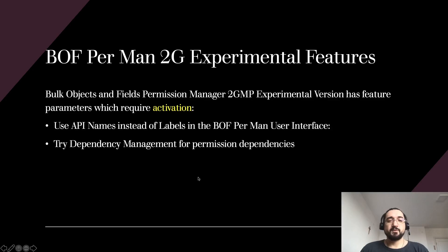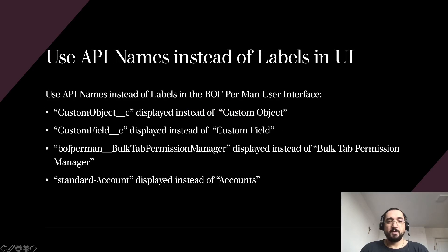There are two experimental features which require activation. The first is to use API names instead of labels in the user interface. If you enable this feature, you will see object developer names like custom_object__c instead of the label, custom_field__c instead of the field label, and the namespace prefix tab developer name instead of the tab label. The same applies for standard tabs — you will see standard-accounts displayed instead of the standard label which is Accounts.